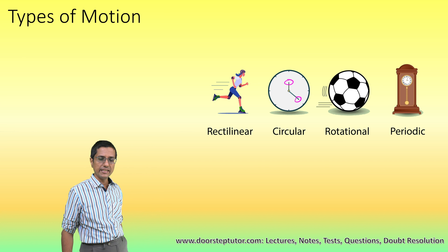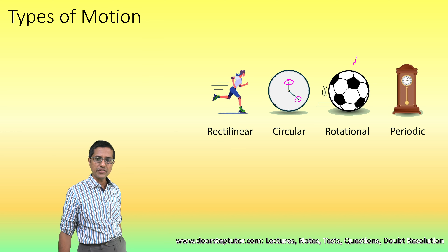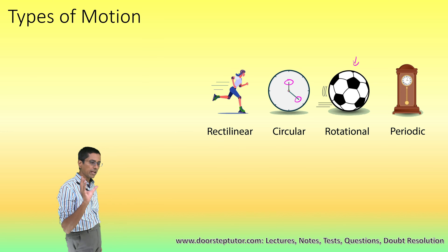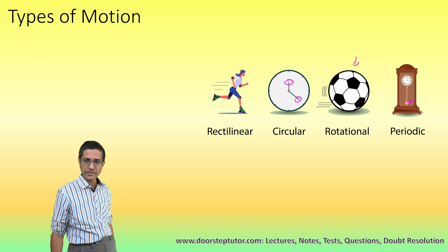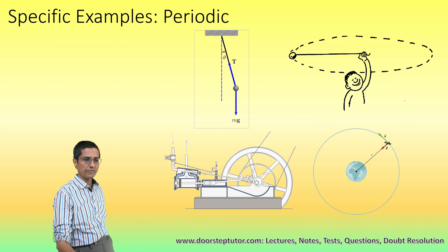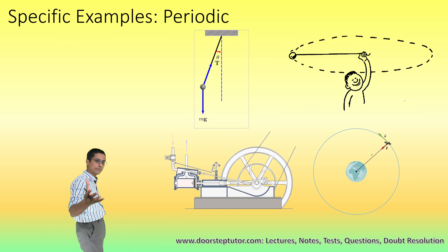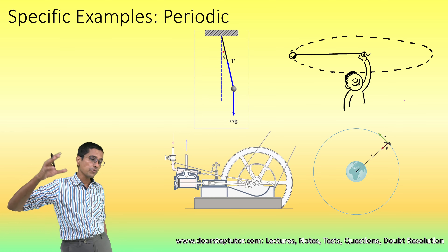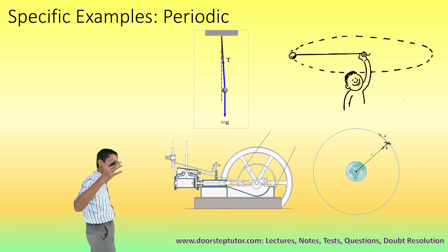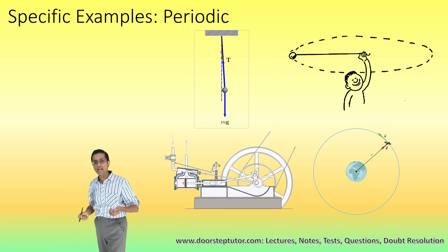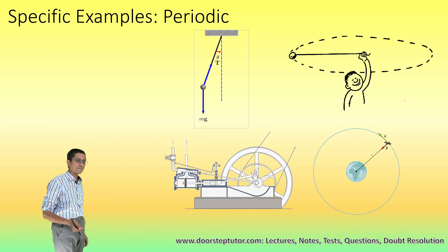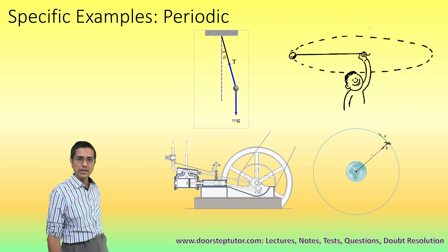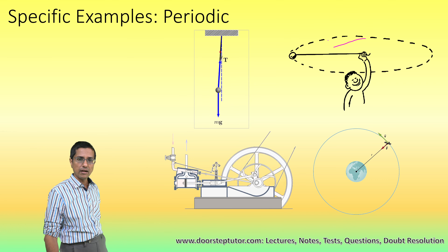Circular motion is what the hands of a clock exhibit. Rotational motion is when the ball actually rotates. Periodic motion is a motion which actually repeats after a fixed interval of time. Most celestial bodies exhibit periodic motion because it repeats after a fixed amount of time. A pendulum is the best example — its motion is periodic and repeats after a certain amount of time.